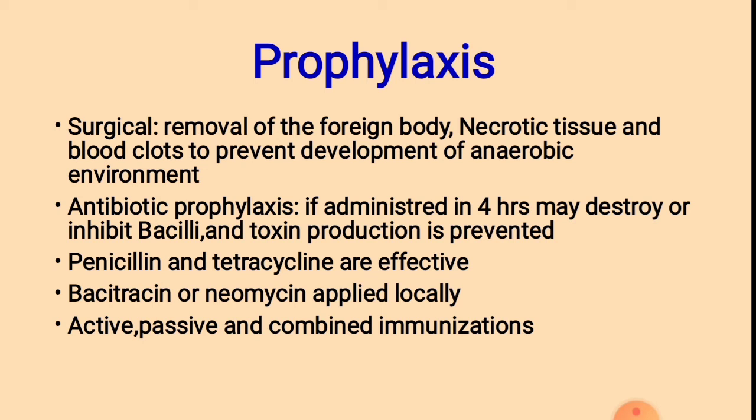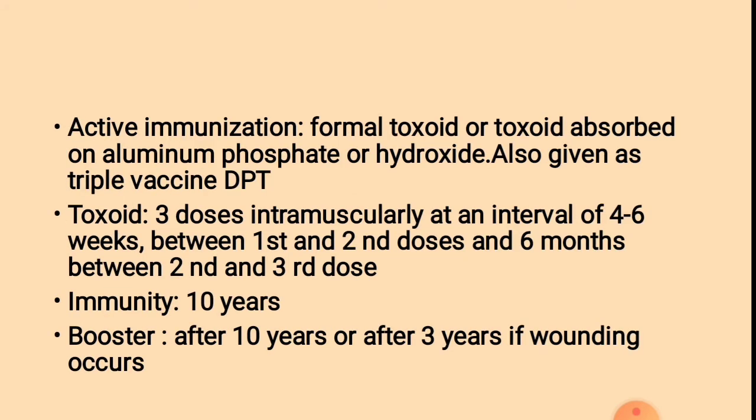Active, passive, and combined immunization are very effective prophylactic measures. Active immunization: formal toxoid or toxoid absorbed on aluminium phosphate or hydroxide is given as a triple vaccine — DPT (diphtheria, pertussis, tetanus). Toxoid is given as 3 doses intramuscularly at intervals of 4 to 6 weeks between the 1st and 2nd doses, and 6 months between the 2nd and 3rd doses. Immunity lasts up to 10 years.